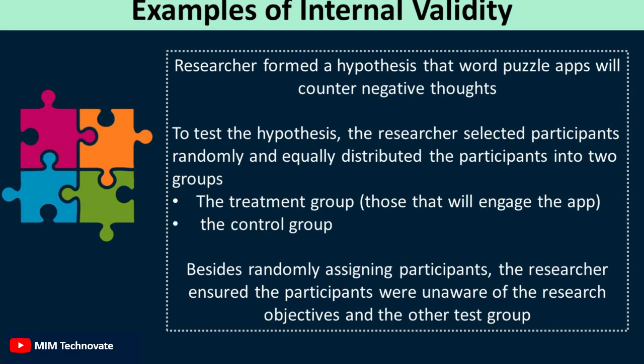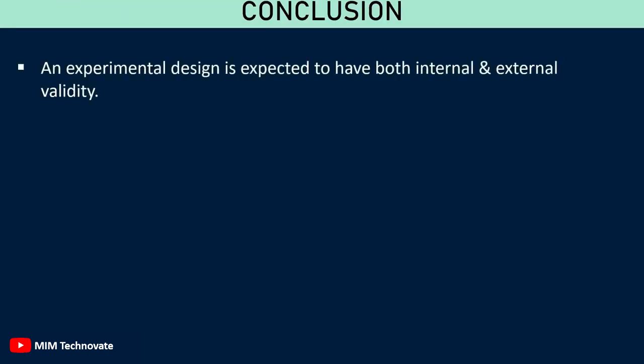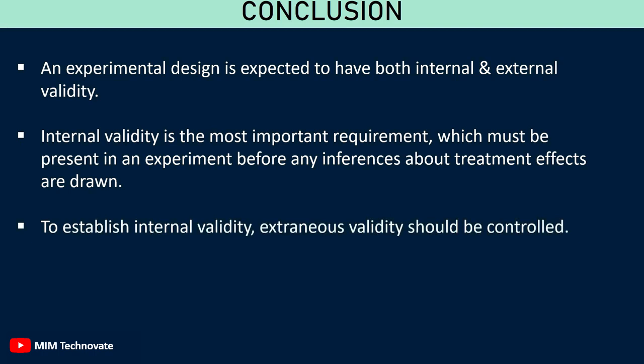Conclusion: An experimental design is expected to have both internal and external validity. To establish internal validity is the most important requirement, which must be present in an experiment before any inferences about the treatment effects are drawn. To establish internal validity, extraneous variables should be controlled.